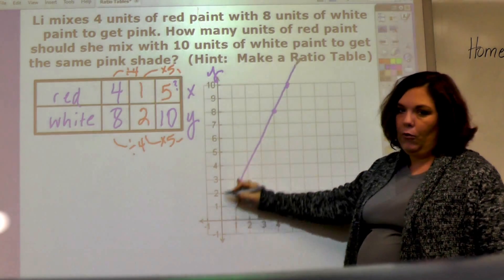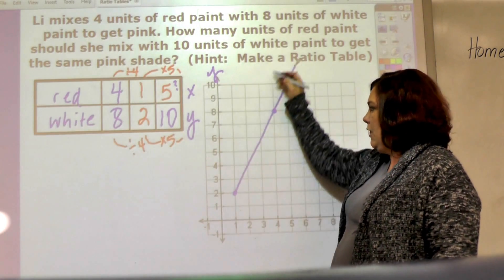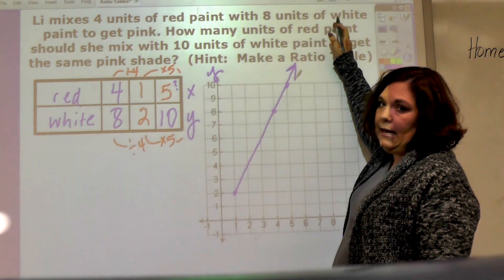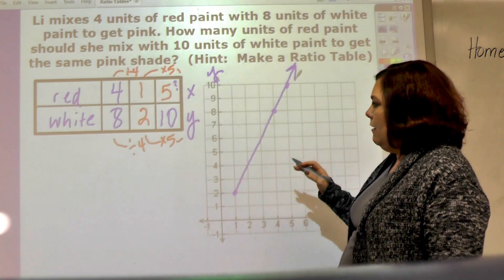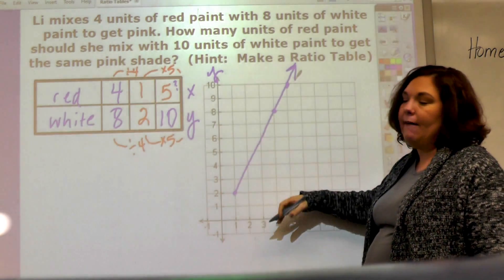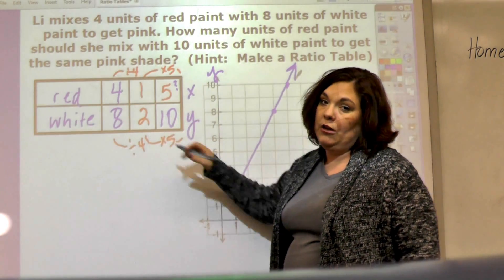This should be a straight line because it's proportionate. Whenever it's proportionate it is a straight line, and it keeps going and you can keep adding and adding. So this is the way that you plot points on a graph from a table, and you're going to be doing this a lot.